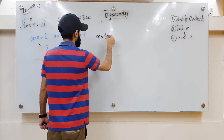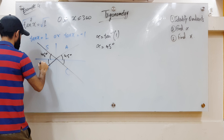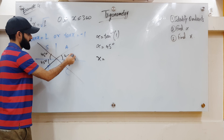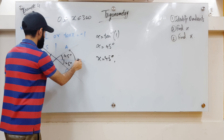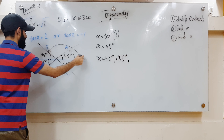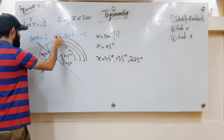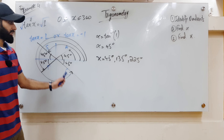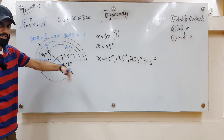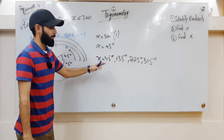Step two: find alpha. Alpha = tan⁻¹(1) = 45 degrees. So we have 45 degrees in each of the four quadrants. Step three: find x. In the first quadrant, x = 45 degrees. In the second, x = 180 − 45 = 135 degrees. In the third, x = 180 + 45 = 225 degrees. In the fourth, x = 360 − 45 = 315 degrees. So whenever a trigonometric function could be both positive and negative, you take all four quadrants into consideration and you end up with four different answers.